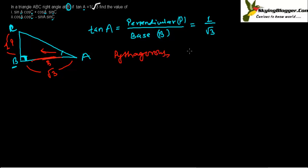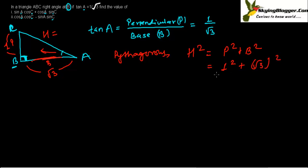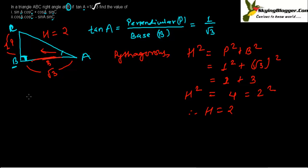From the Pythagorean theorem, H squared equals P squared plus B squared. So H squared equals 1 squared plus root 3 squared, which equals 1 plus 3, giving us H squared equals 4, which is 2 squared. Therefore H equals 2. So we got the value of H, which is 2.